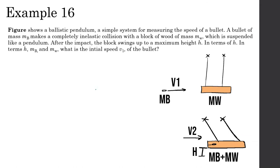The figure shows a ballistic pendulum — a simple system for measuring the speed of a bullet. A bullet of mass MB makes a completely inelastic collision with a block of mass MW, which is suspended like a pendulum. After the impact, the block swings to a maximum height H. In terms of H, MB, and MW, what is the initial speed V1 of the bullet?